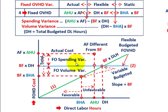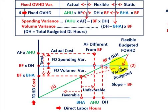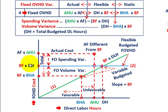To summarize the key points: we have to look at our budgeted hours allocated or allowed for the period, actual hours used, and those denominator hours. Then where our actual total fixed rate intersects with the budgeted fixed rate times those denominator hours, and how our actual cost compares to the budgeted rates times the denominator hours and budgeted rates times the budgeted hours allowed.